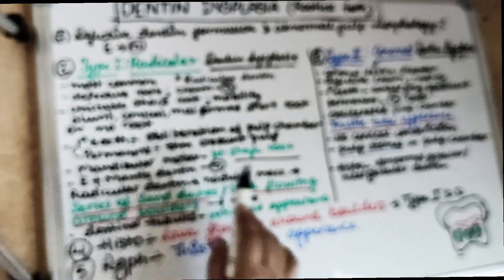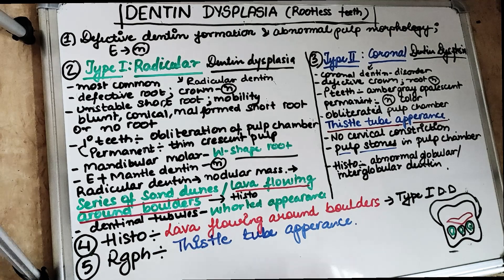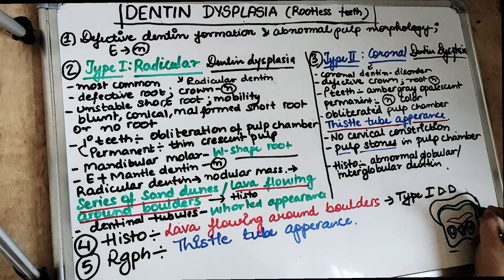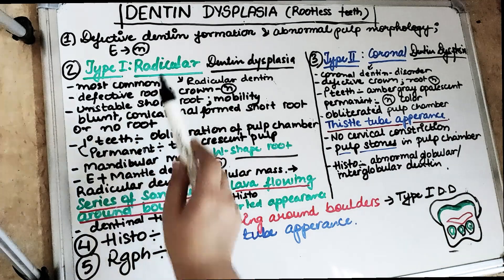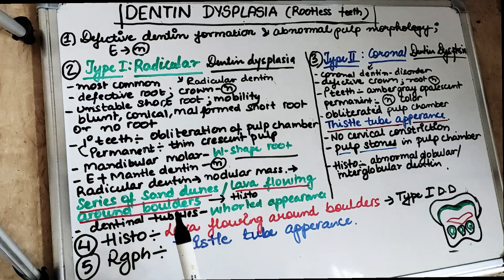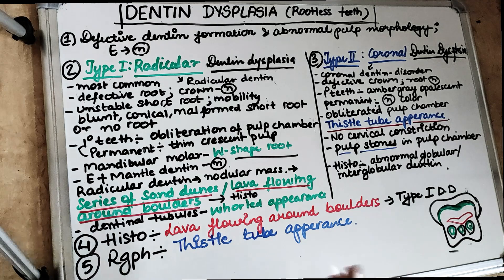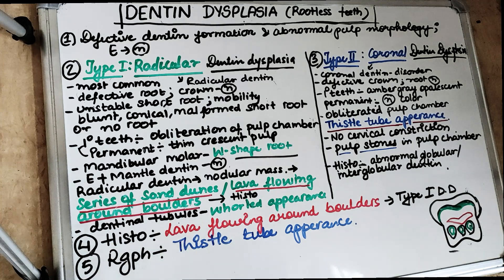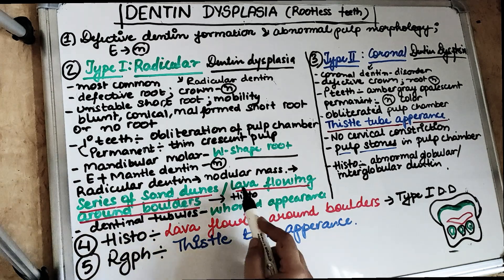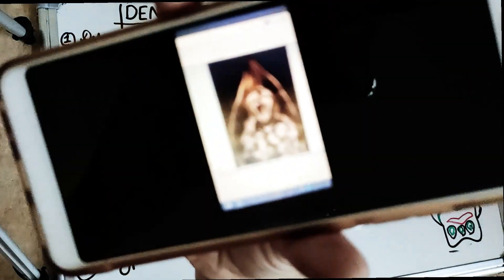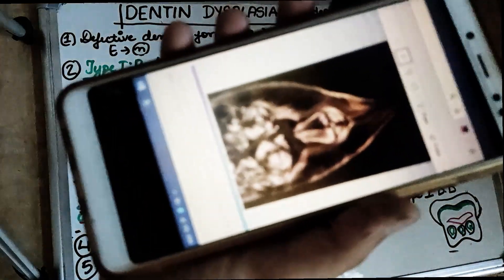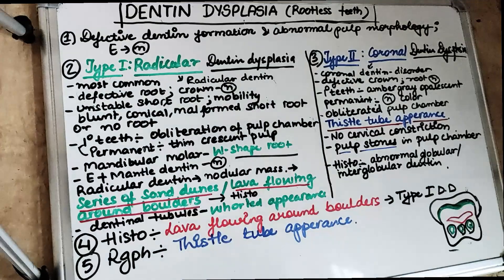The enamel and the mantle dentine — the dentine just beneath the enamel — are absolutely normal in the radicular type. However, in the radicular dentine, there is an appearance of a fused nodular mass of radicular dentine. Because of this mass, there is an appearance of defective dentinal tissue known as 'lava flowing around the boulders.' Histologically under the light microscope, it looks like lava is flowing, or there is a series of sand dunes.